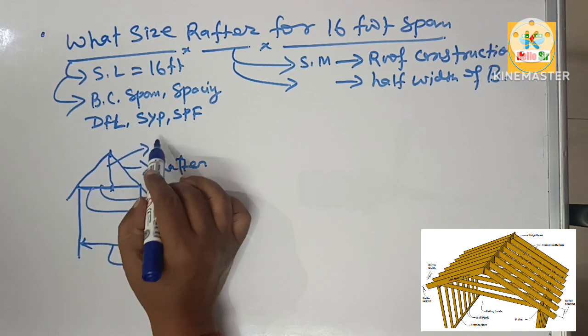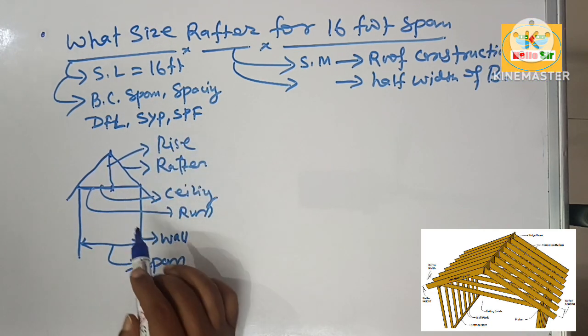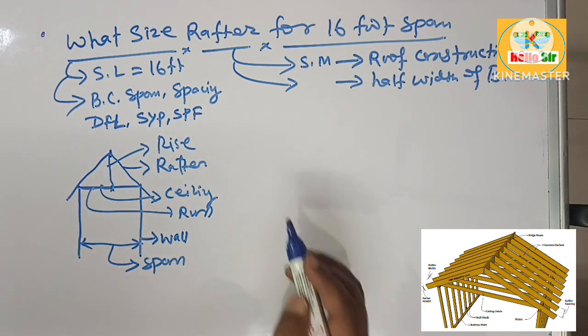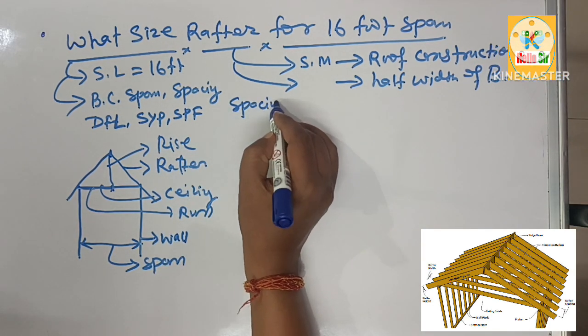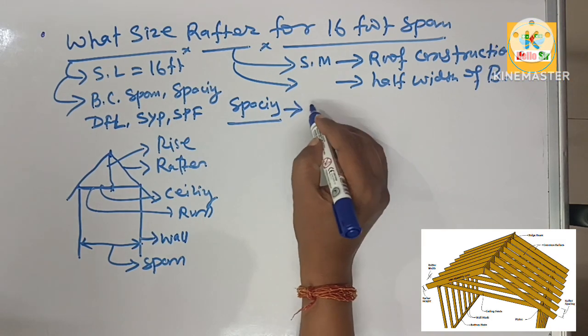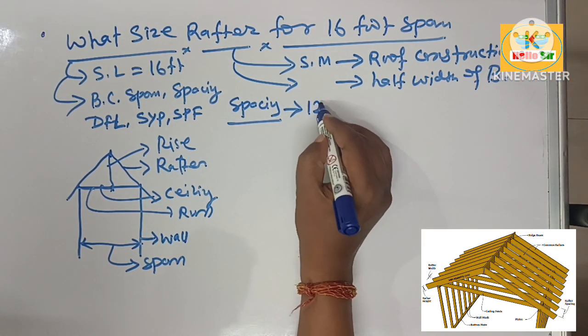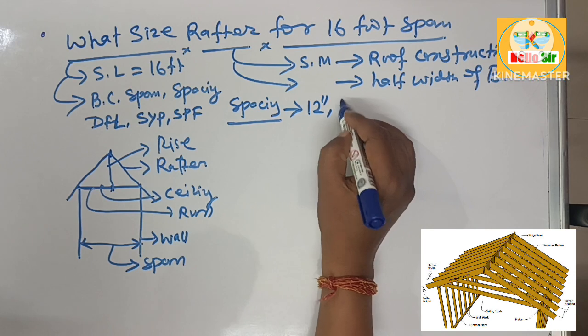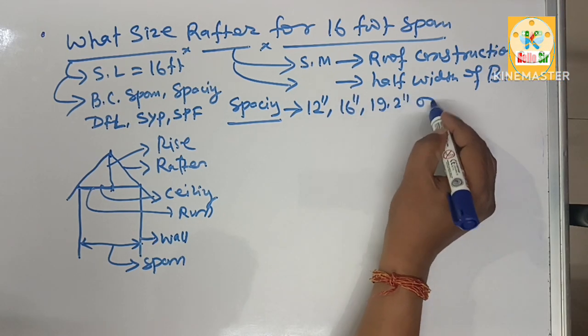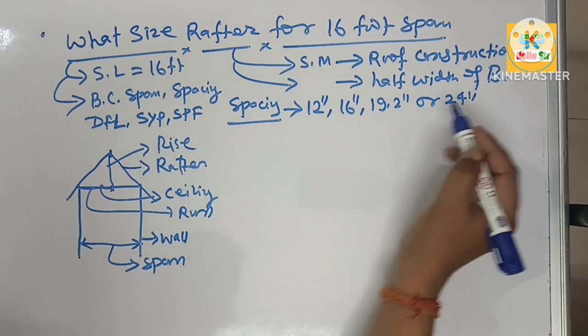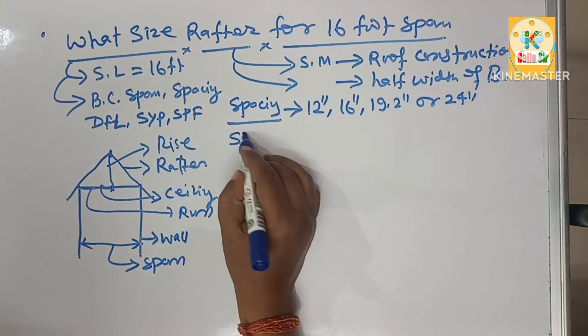The vertical height from peak to run is called the rise. Here we describe the spacing: the spacing between the rafters is 12 inches, maybe 16 inches, maybe 19.2 inches, or maybe 24 inches.